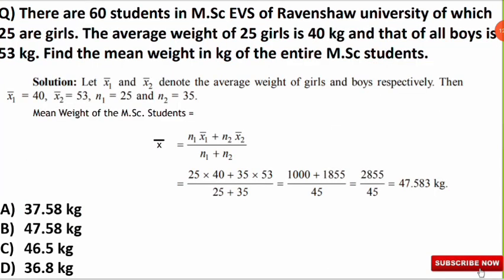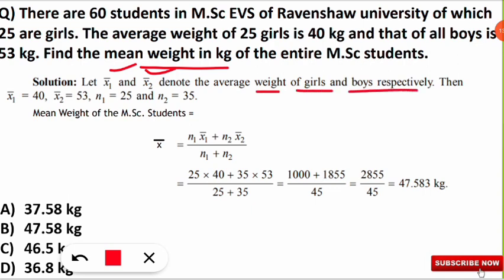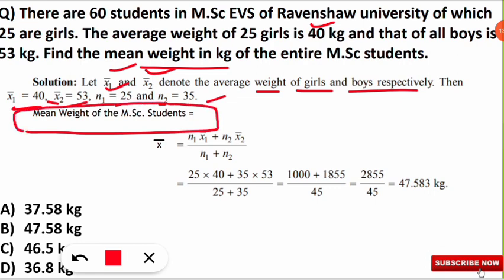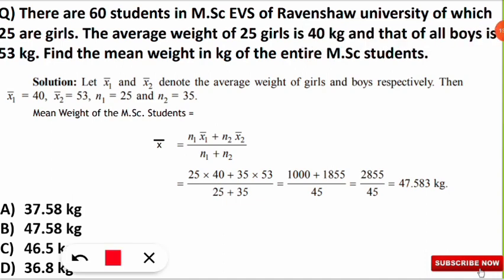This is a case of the Combined Mean formula. Let x̄₁ = average weight of girls = 40 kg, x̄₂ = average weight of boys = 53 kg, n₁ = 25 (girls), n₂ = 35 (boys). The combined mean formula is: x̄ = (n₁x̄₁ + n₂x̄₂) / (n₁ + n₂).